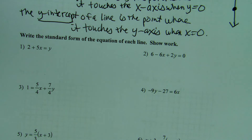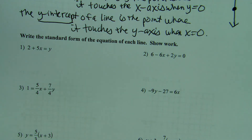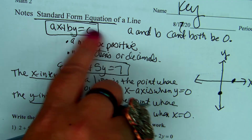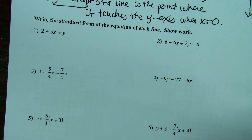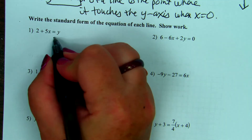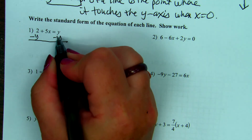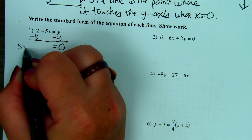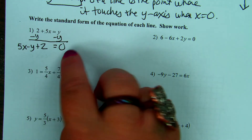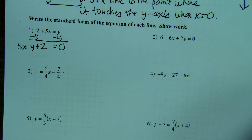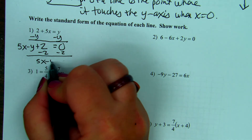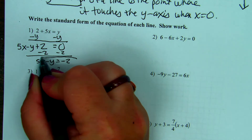First, write the standard form equation of each line and show work. We're starting with an equation and want to get it into the form Ax plus By equals C. X is here and it's positive so we keep it. We subtract y from both sides — y minus y is 0 — and we get 5x plus 2 minus y equals 0. The 2 needs to move to the other side, so we subtract 2 and get 5x minus y equals negative 2. That's the standard form.